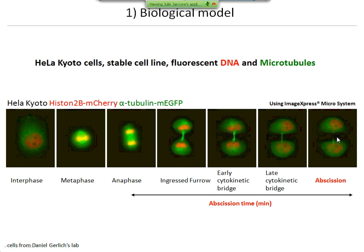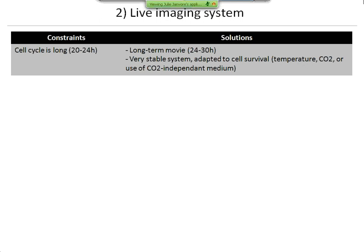With this cell line, we can easily record the abscission timing, meaning the delay between anaphase and abscission. The second task was to set up a good protocol for live imaging. Recording movies of dividing cells is quite challenging, because usually the objects we want to follow are really small, and second, dividing cells are very sensitive to phototoxicity.